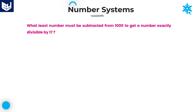See the first question: what least number must be subtracted from 1000 to get a number exactly divisible by 17? What should be the least number which we have to subtract from 1000 in order to get the number divisible by 17? It is very simple — just divide the given number 1000 by 17.